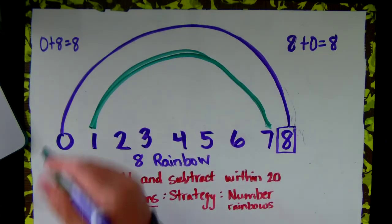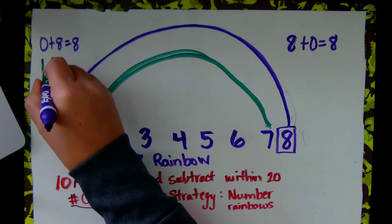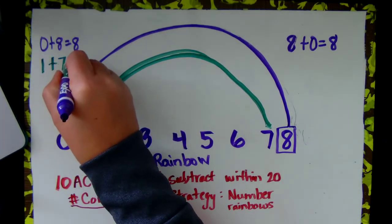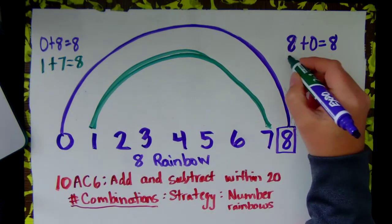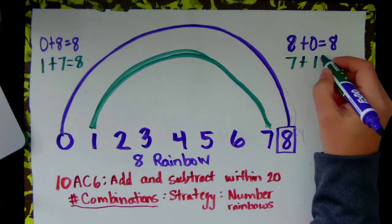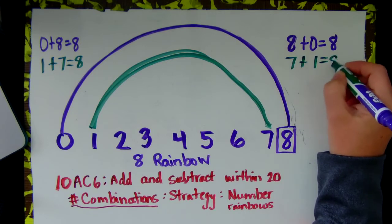Now we are going to write it, 1 plus 7 equals 8. 7 plus 1 equals 8.